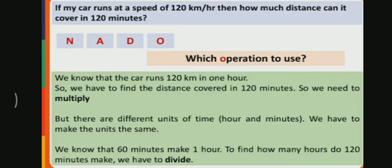But there are different units of time - hour and minutes. We have to make the units the same. We know that 60 minutes make 1 hour. To find how many hours 120 minutes make, we have to divide.